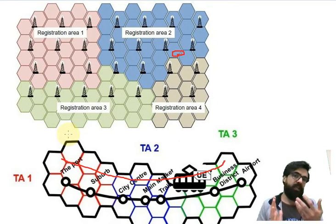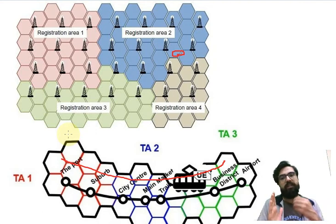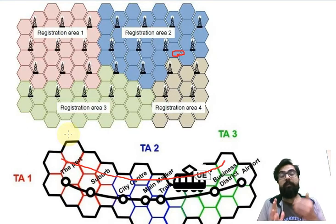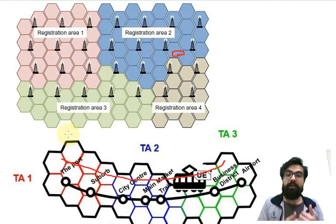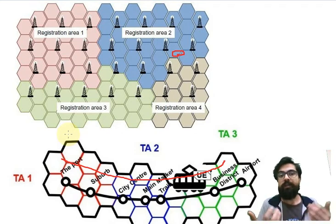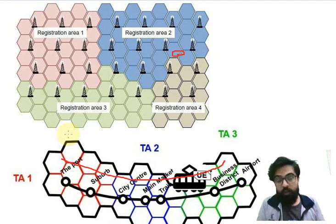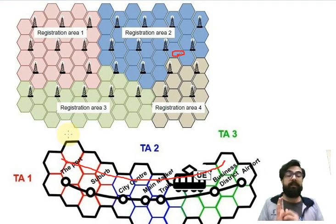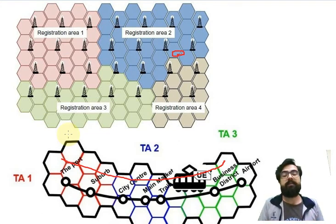As SIB2 changes the tracking area, the UE will be alerted. Previously MME set my previous tracking area, but now it changed. What will happen to me? I'm not going to receive any phone call or text. What am I supposed to do?